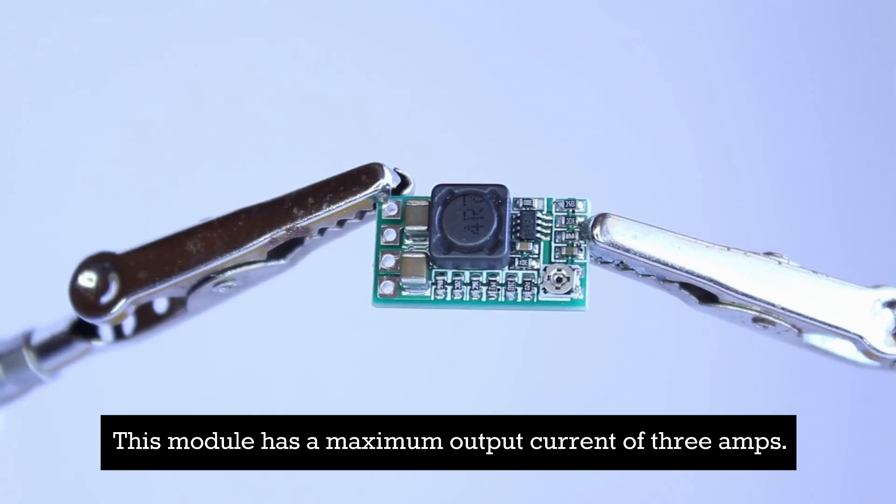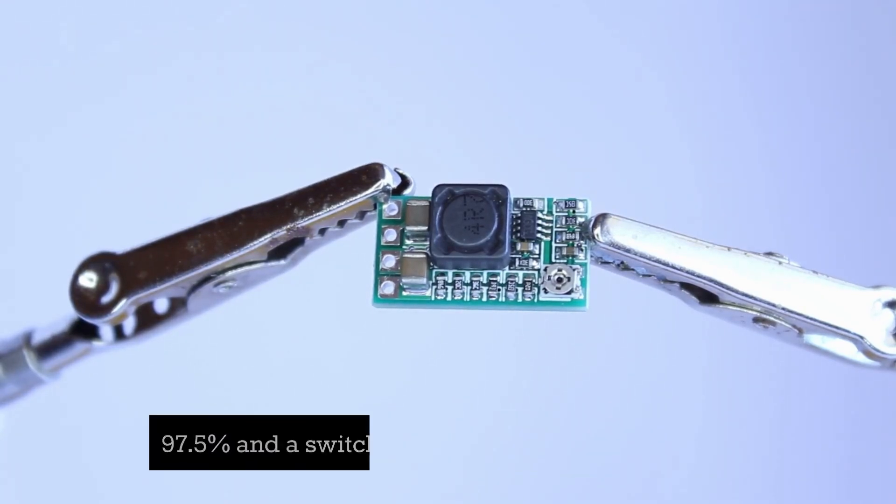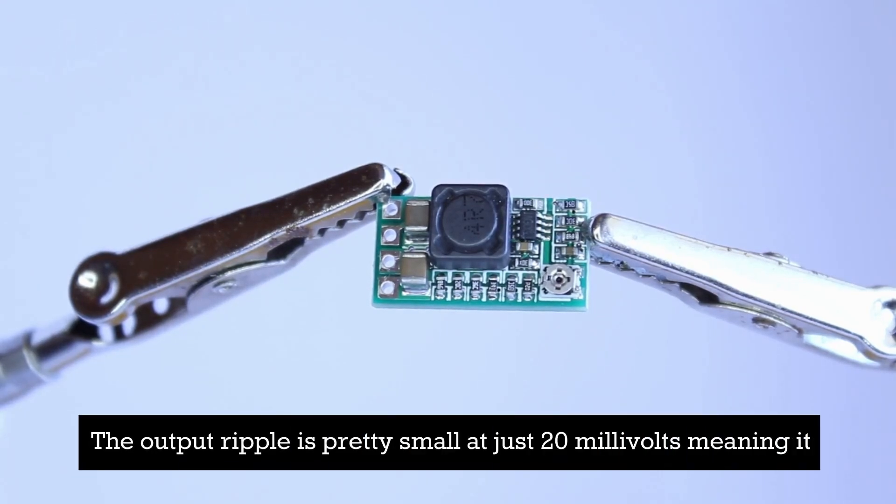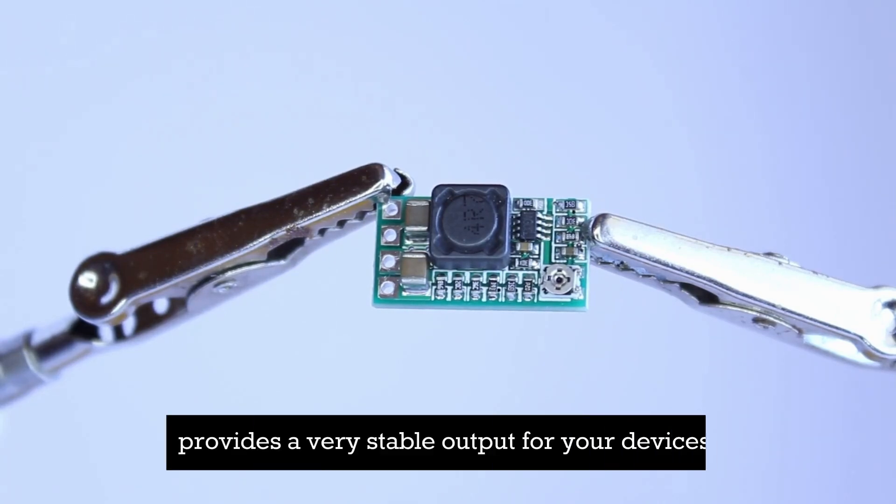This module has a maximum output current of 3 amps. It boasts an efficiency of up to 97.5 percent and a switching frequency of 500 kilohertz. The output ripple is pretty small at just 20 millivolts, meaning it provides a very stable output for your devices.